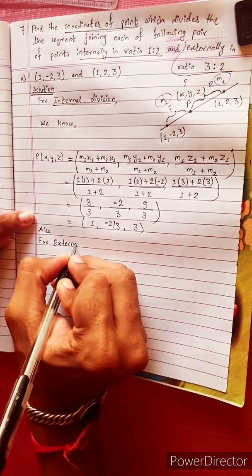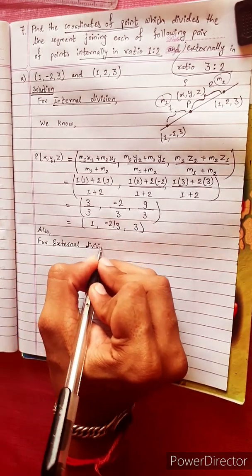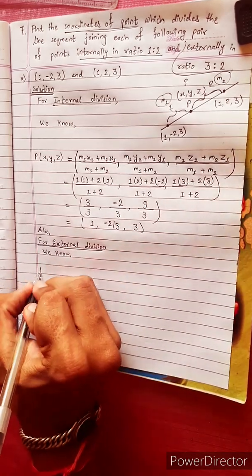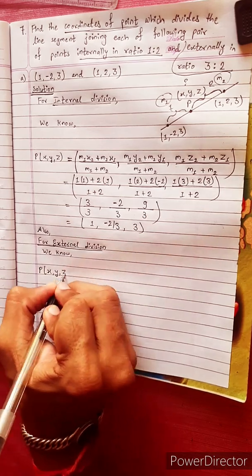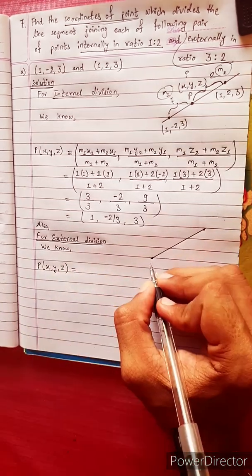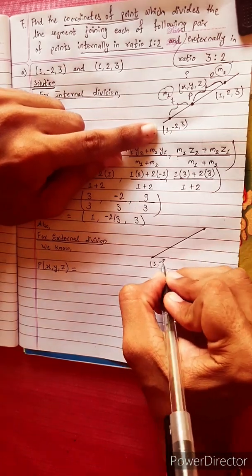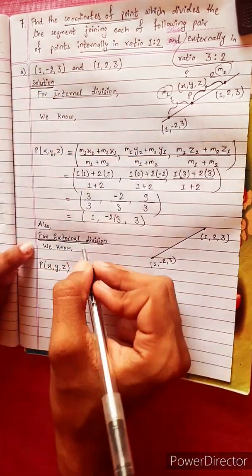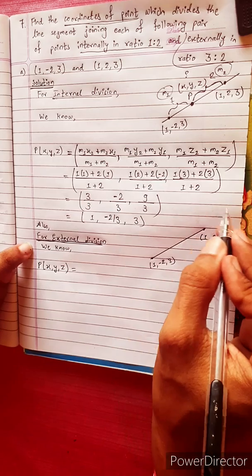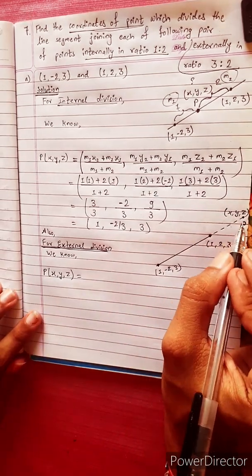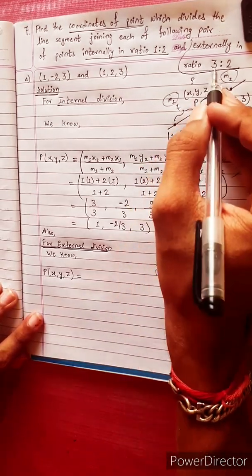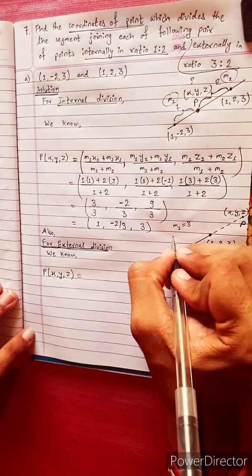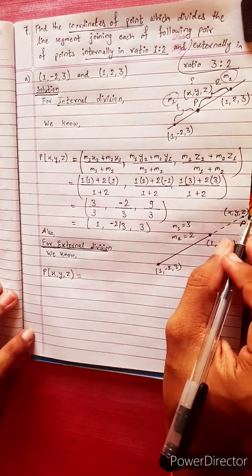Now for external division. Suppose point coordinates are (1, −2, 3) and the other point is (1, 2, 3). For external division, the unknown point is x, y, z — point P. The ratio is 3 to 2, so let m1 equal 3 and m2 equal 2. This line is divided in the ratio 3 to 2 externally.